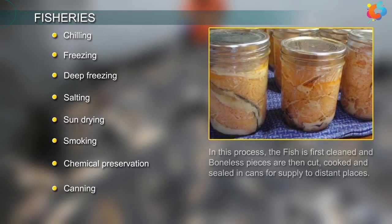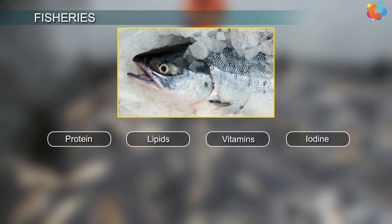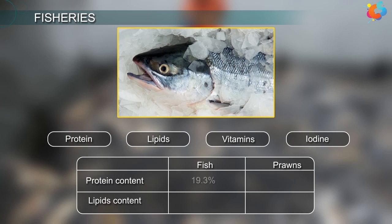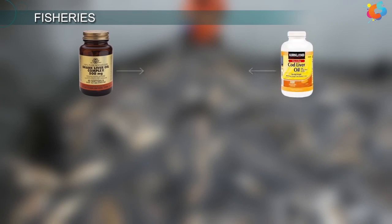Canning: In this process, the fish is first cleaned and boneless pieces are then cut, cooked and sealed in cans for supply to distant places. Economic Importance of Fishes: Fishes are used as food and are a good source of protein, lipids, vitamins and iodine. Total protein content in fishes is 19.3% and in prawn is 26.8%. Lipid content is high in fish but less in prawn. Fish and other seafood are rich in iodine and other minerals.